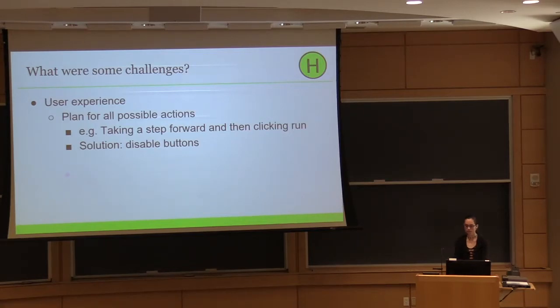A more general obstacle I had was the user experience. So this is a graphical application. Of course, the user interface is a critical part of what I was working on. So a challenge with that is that you have to plan for every possible action and every possible step in the application. So it's like trying to think of dozens of edge cases, basically. For example, what if a user hit the step forward button to start stepping through some characters on a machine, and then decided they want to hit the run button? What should you do in that situation? So in this example, I chose to disable the run button once you've started stepping through the machine.